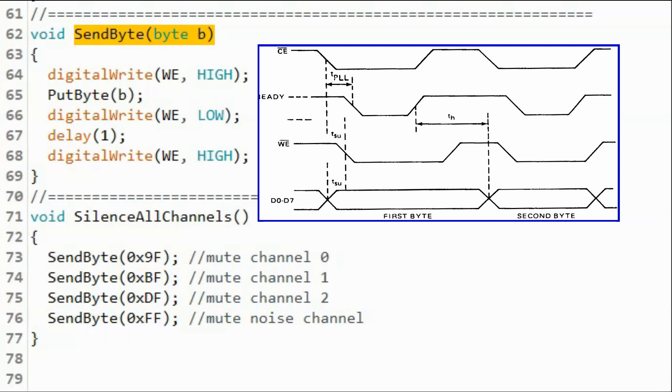And then we put the byte on the data lines from D0 to D7. And then we pull the write enable pulse to low. This will then strobe the data inside the internal register of the chip. And then we pull the write enable pulse high again.